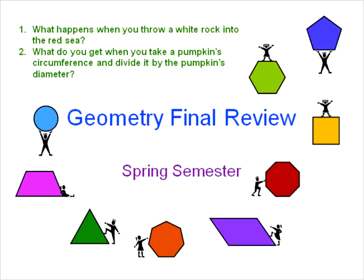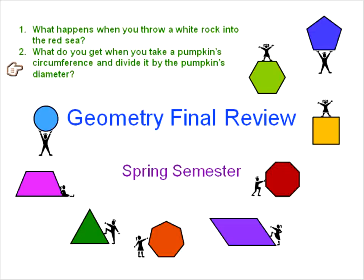Quickly, what are the answers to our two riddles? What happens when you throw a white rock into the Red Sea? Well, colors don't matter - it's just going to sink. And what do you get when you take a pumpkin's circumference and divide it by the pumpkin diameter? Your circumference is pi times D; if you divide out the D, you're left with pumpkin pi. Since we'll talk about circles, I thought that was kind of funny.